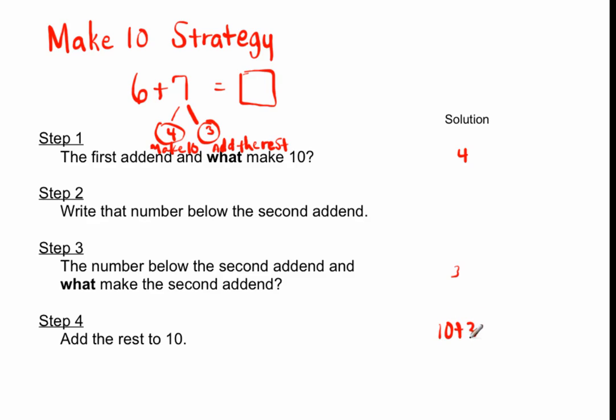So you get 10+3=13, and that's the answer. You can use the Make 10 Strategy to add two one-digit numbers very easily and quickly. The strategy helps you understand how to add not only one or two-digit numbers, but multi-digit numbers as well.